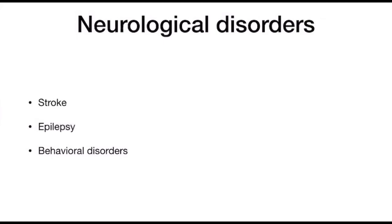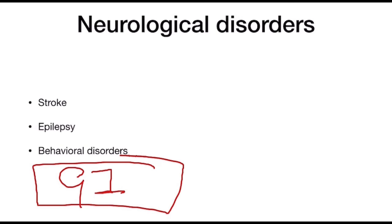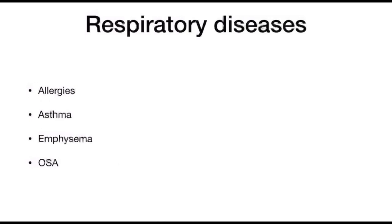Regarding GI disorders like stomach ulcers or colitis — patients with a history of colitis may not be able to take certain antibiotics, as many antibiotics can cause a severe form of colitis. For example, metronidazole is implicated, so drugs need to be tapered or changed according to the patient's history.